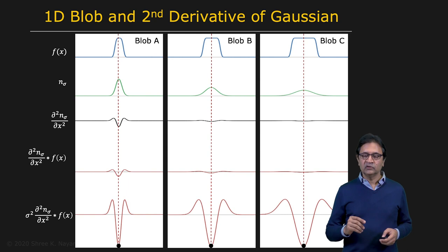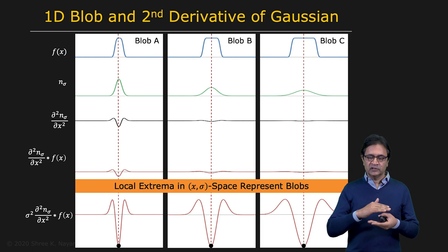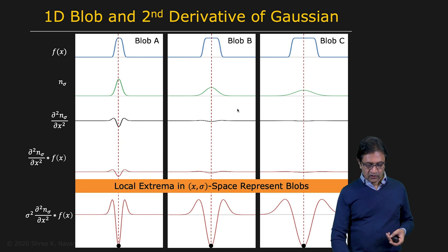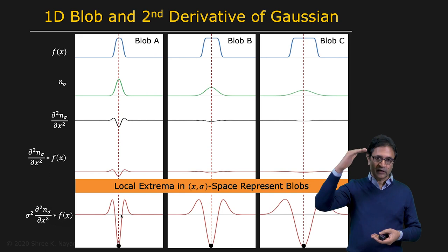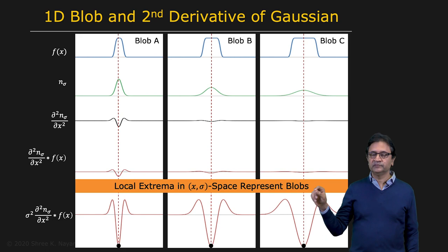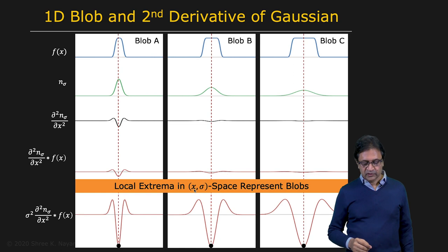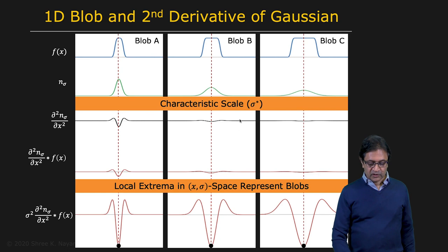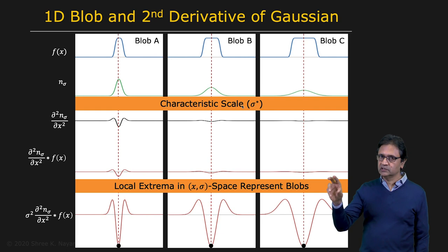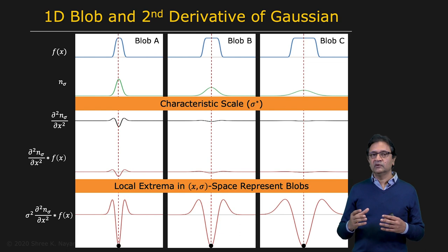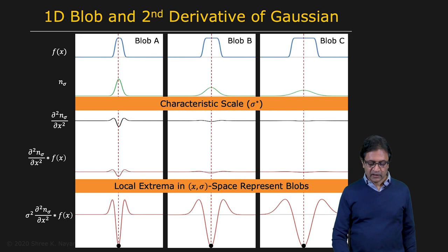All you need to do to find the blobs in the image is maintain this stack of images which correspond to different scales — that is the output of the second derivative of the Gaussian applied to the image at multiple sigma values. That stack is described with two parameters: X for the spatial coordinate and sigma for scale. You then find local extrema in this X-sigma space. The X's where the extrema lie correspond to the locations of the blobs, and the sigmas correspond to the scale of the blob itself.